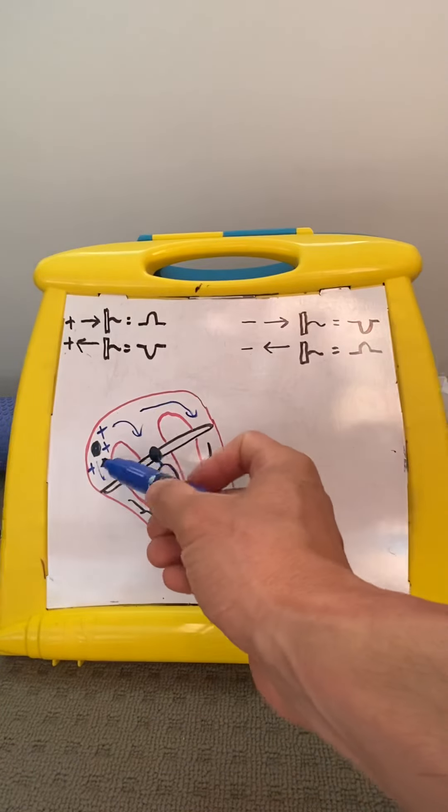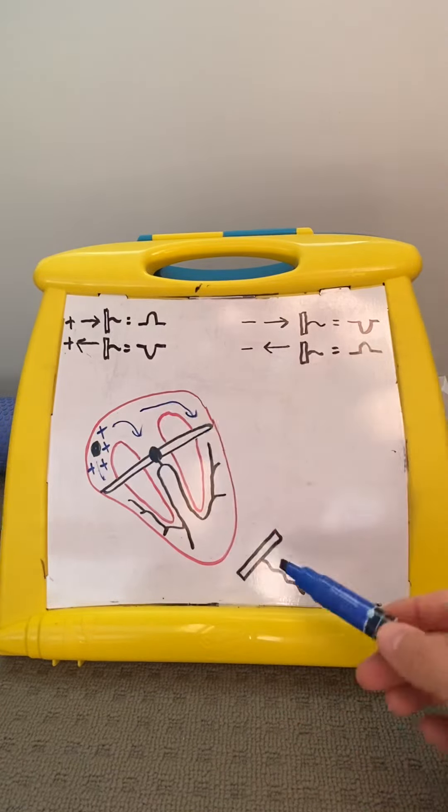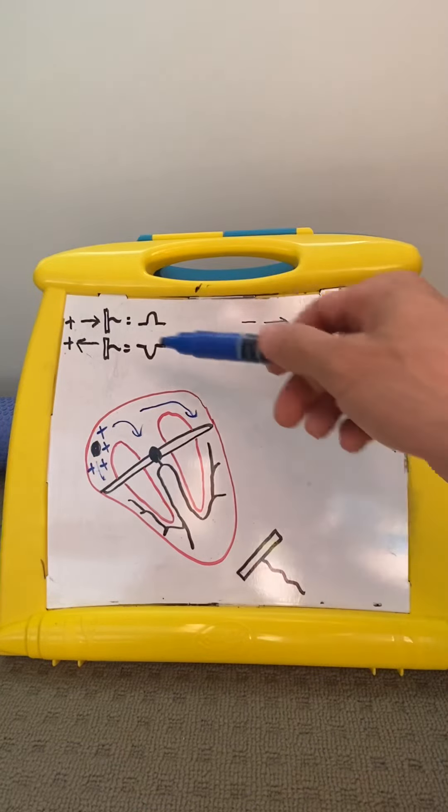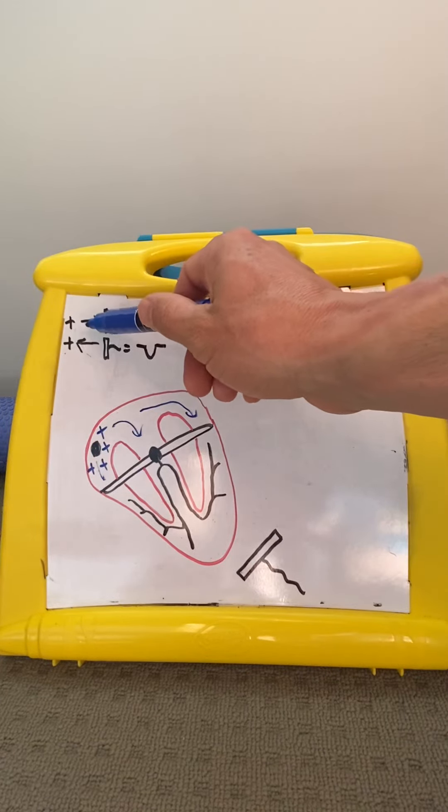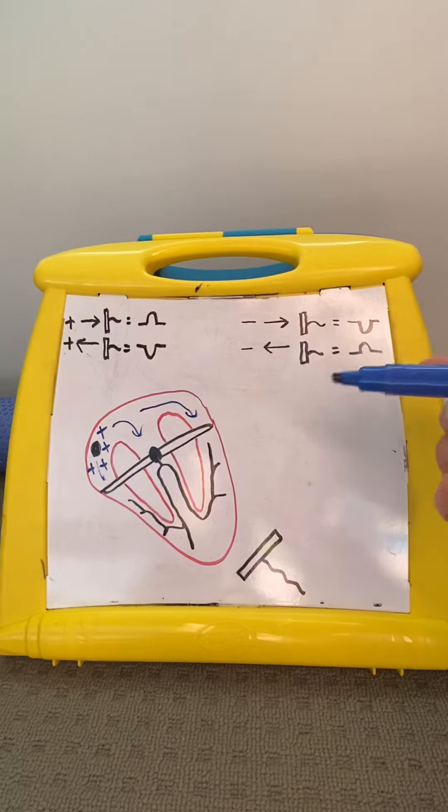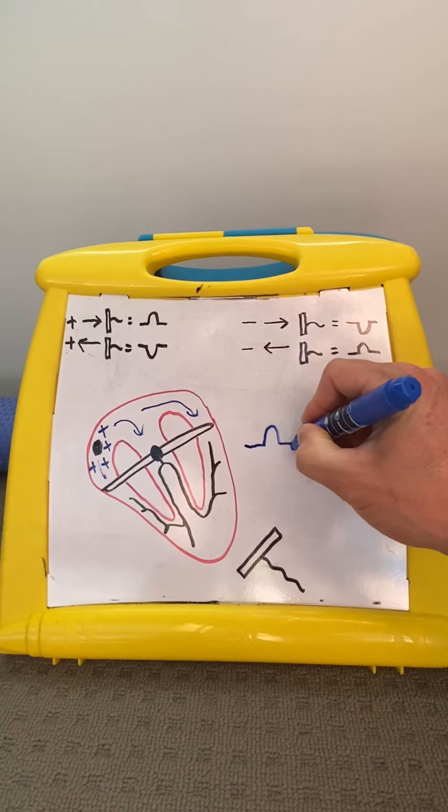Now you can see here that this depolarization goes in the direction of this lead, and here's the cheat sheet. If something positive goes in the direction of the lead, you get a bump up on the ECG readout. So here's the bump up.